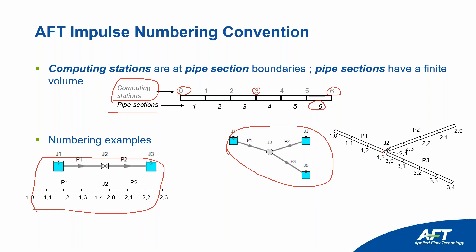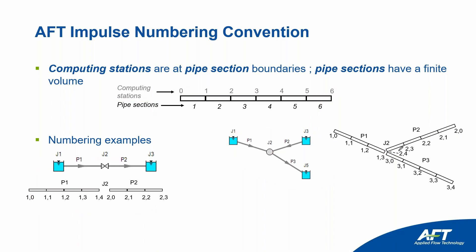For a branch junction example, you could look at pipe one station two, pipe two station four (the inlet), or pipe three station zero — any of those three stations would tell you exactly what's happening at that particular branch junction location. Understanding how pipes are broken up into sections and how stations are numbered is really important for interpreting results.